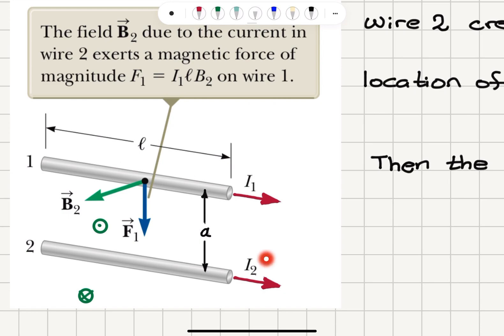The magnetic field B2 created due to the current I2 will be determined using the right-hand rule. We point our thumb in the direction of the current, and our fingers curl — for the right hand, fingers curl out of the board towards us and into the page on the other side. This magnetic field is perpendicular to the plane that contains I1 and I2, and it's pointing out of the page.